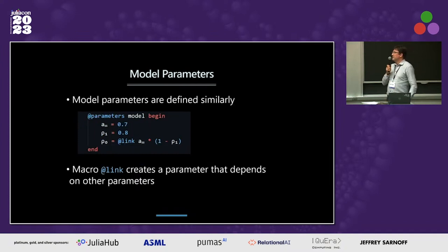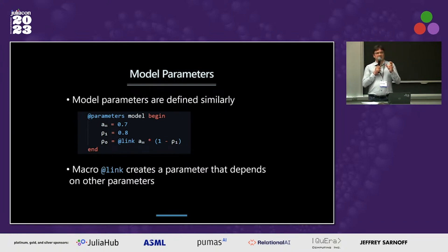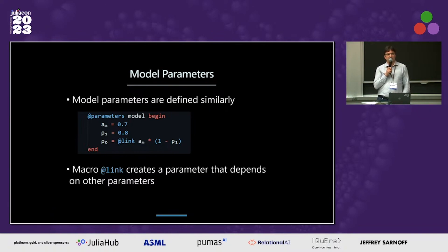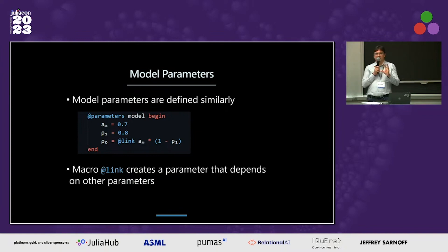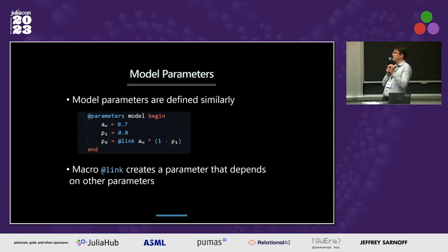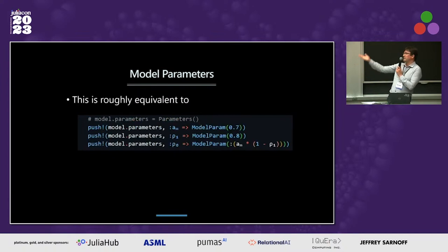A similar thing applies to model parameters, and here we also have link-type parameters, which allow us to define a parameter that depends on other parameters — this becomes really handy. In this autoregressive model example, there are two parameters in the equation. Rho1 is the interesting autoregressive coefficient; Rho0 is not interesting at all — the interesting one is the steady state. So we allow the economists to set the steady state via Rho1, and Rho0 adjusts automatically, without needing to know the internals of the package.